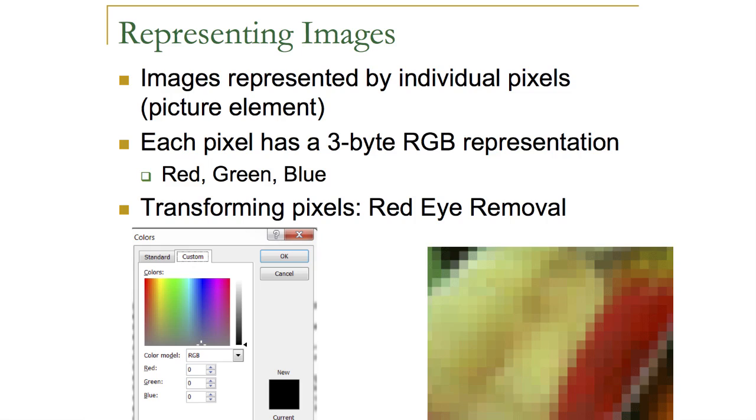It's also important to stress the 'so what' of why we talk about binary numbers, and a really interesting context is how images are represented. Images are made up of individual pixels — like when a student approaches a TV monitor very closely and sees the pixelization, with millions of individual pixels together forming a mosaic that looks like a real image when you step back. Each one of those pixels is represented by three bytes, with each byte holding a red, green, or blue value — a total of three bytes per pixel.